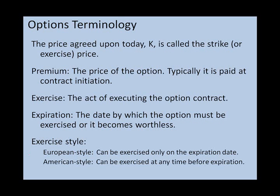When we dealt with forwards and futures, the value of the contract at initiation was zero. But with options that's not true, because we don't have to go through with the deal if we don't want to — that means the option has a positive value at all times. The price of the option at initiation is called the premium. If you exercise an option, you execute the contract and actually buy or sell the asset at the agreed price. Expiration is the date at which the option must be exercised or it becomes worthless.